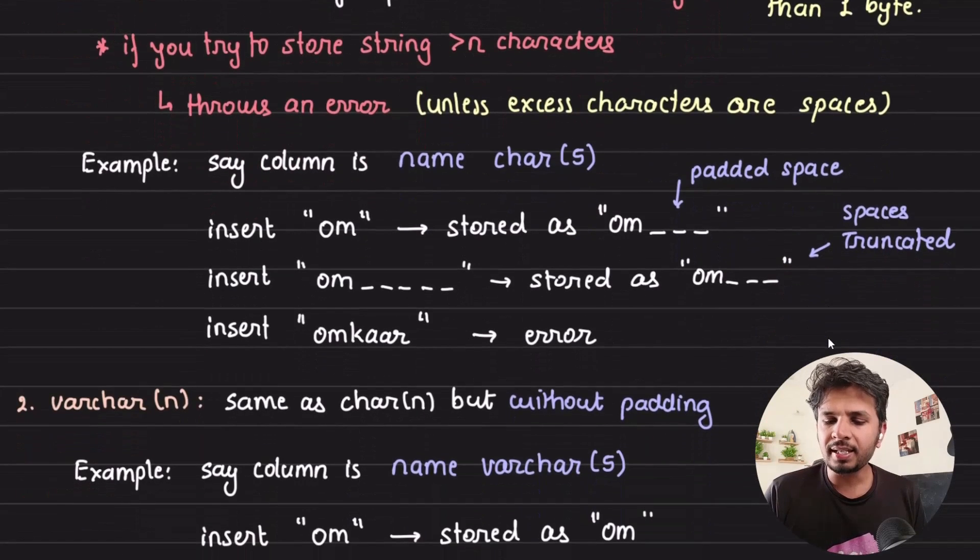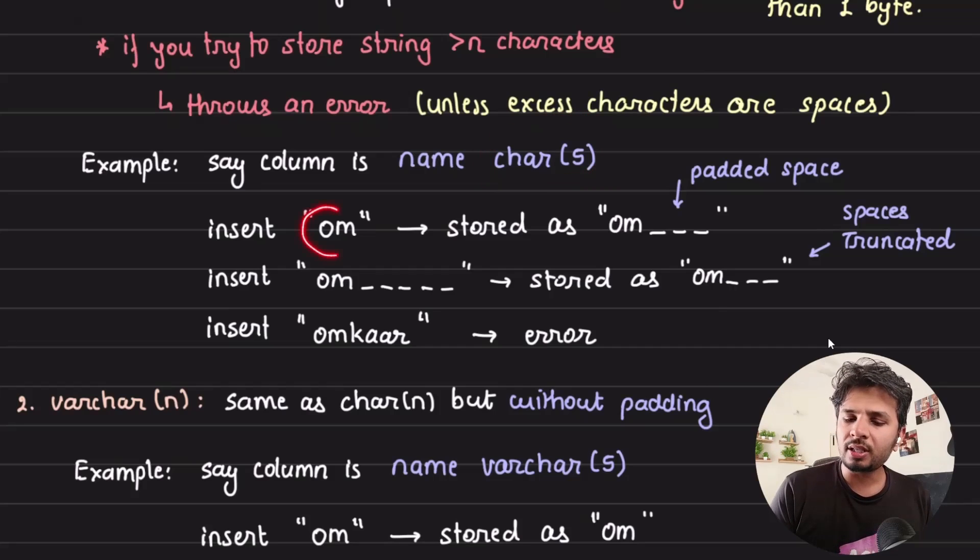For example, let's say I have a table with a column called name whose type is char(5). If we try to insert a string called "om" whose length is 2, it would be stored as "om" followed by three spaces, padding it to match the width of the column.